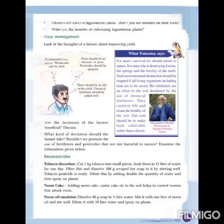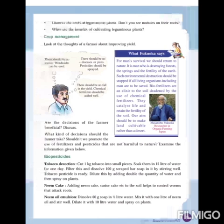Look at the thoughts of a farmer about improving yield. There should be no weeds, so weedicides can be used. There should be no disease or pests, so pesticides should be sprayed. There should be no fall in the yield, so chemical fertilizers should be added well. These are the thoughts of that farmer.